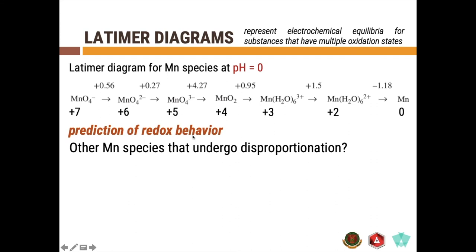Now, by inspecting the Latimer diagram, can you identify other manganese species that will spontaneously disproportionate?